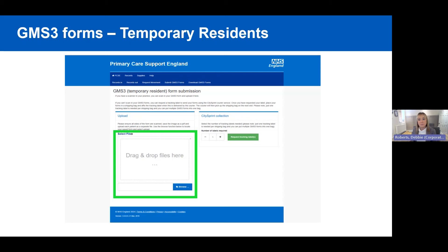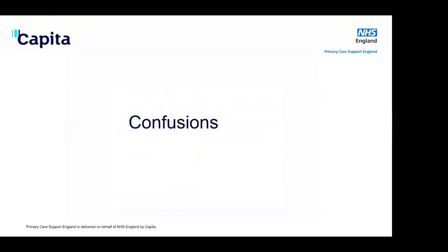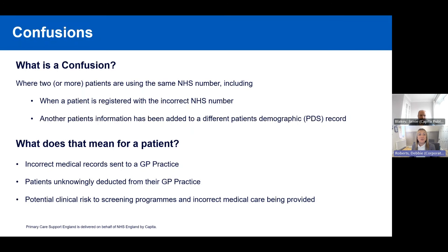We're now moving on to confusions. Jamie will help explain what we class as a confusion. A confusion is where two or more patients' information has been added to the same NHS number, or both patients are using the same NHS number. Typically, if a patient registers at a practice and the wrong NHS number has been picked up, that's a confusion. If incorrect name or address information gets added to another patient's record, that is also a confusion, and PCSE needs to get involved to correct the PDS or Spine record.